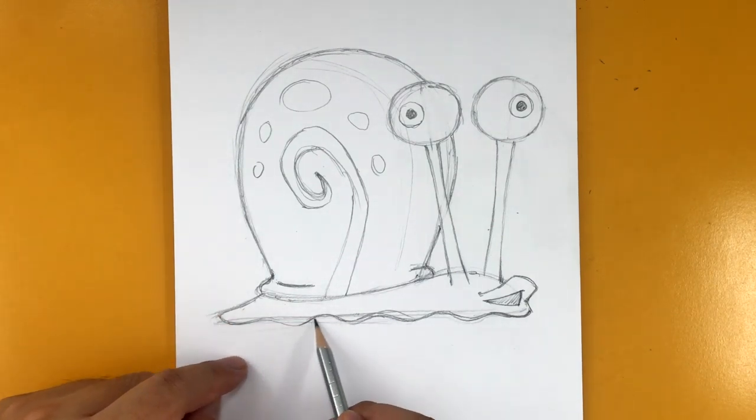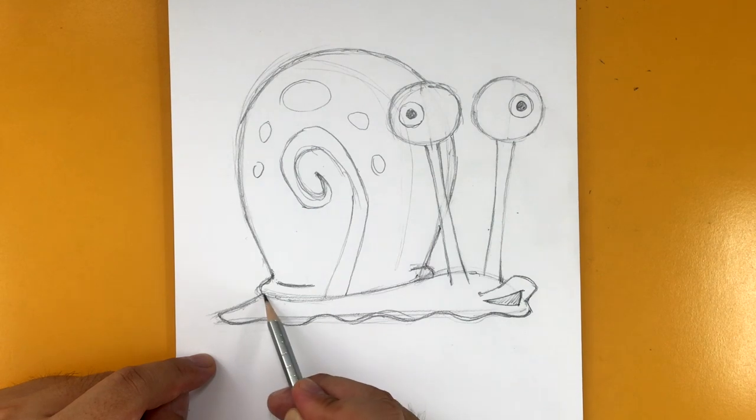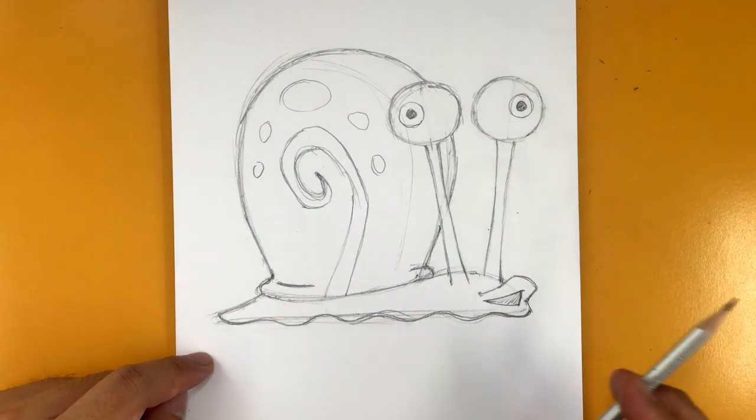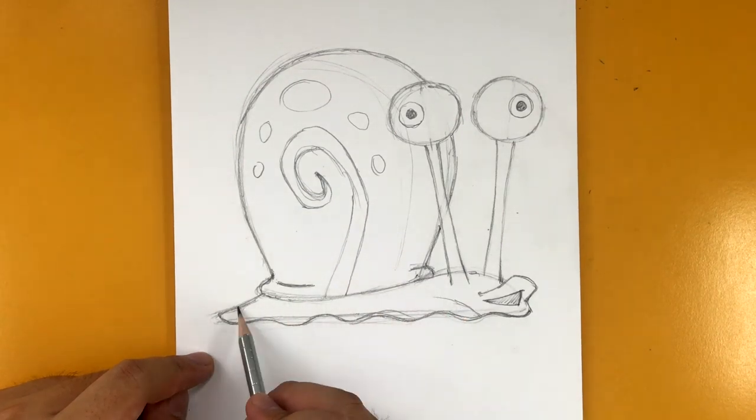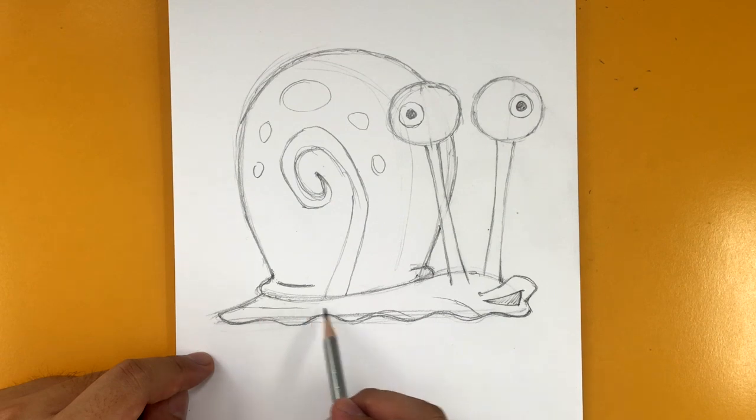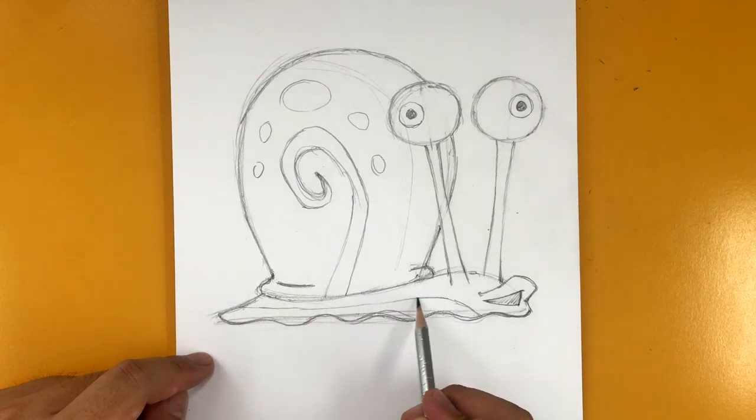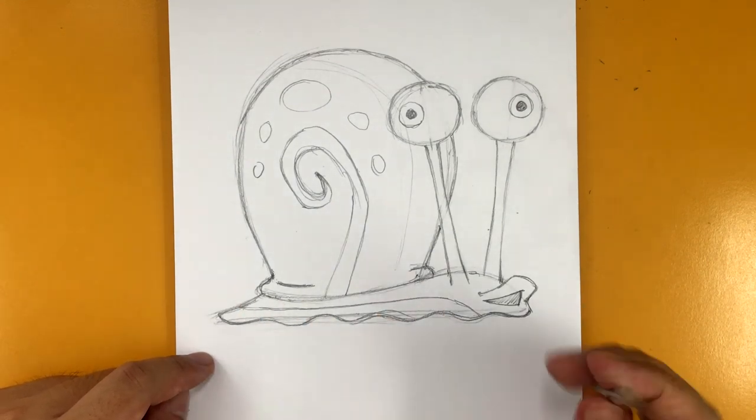And then the underbelly is a different color. It starts right here and then just goes all the way to here. There you go.